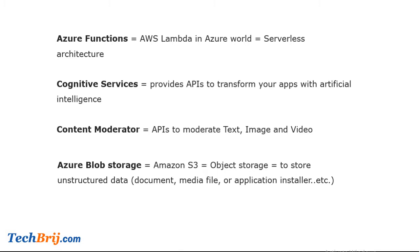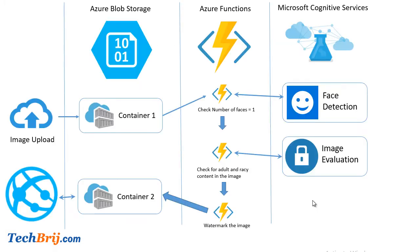Azure Blob Storage is similar to Amazon S3. Here we are going to upload images into an Azure Blob Storage container. We are going to implement this flow: an image is uploaded on Container 1 of Azure Blob Storage, which is configured to trigger an Azure Function. This function will call the Face Detection API of Microsoft Cognitive Services to check the face count.